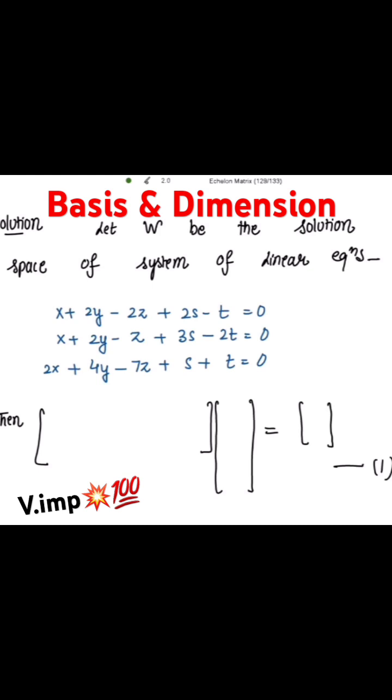So let W be the solution space of system of these linear equations, which can be further written as then just write the coefficient of x, y, z, s, t over here.